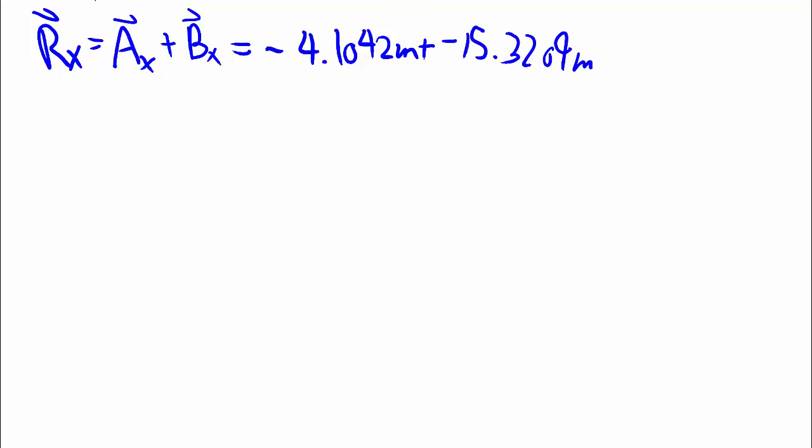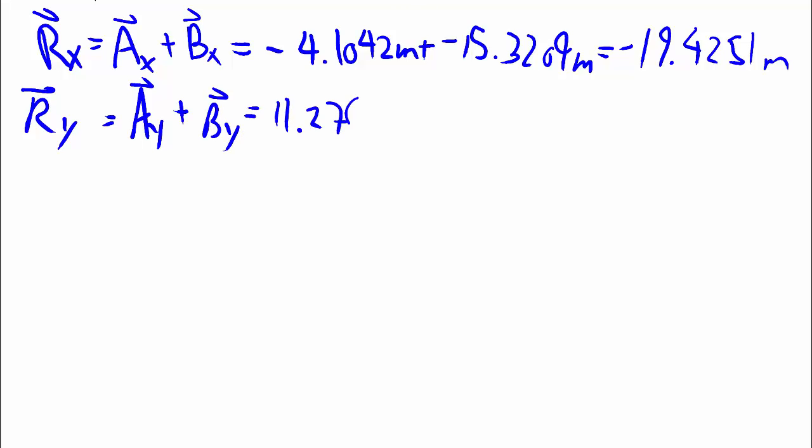So putting it all back together, we recall we can do all the x components by themselves, and that's negative 4.1042 meters plus negative 15.3209. Again, keeping lots of digits because this is not the final answer. And now Ry is similarly that. In this case, we have 11 point something plus negative 12 point something working out to be equal to that.